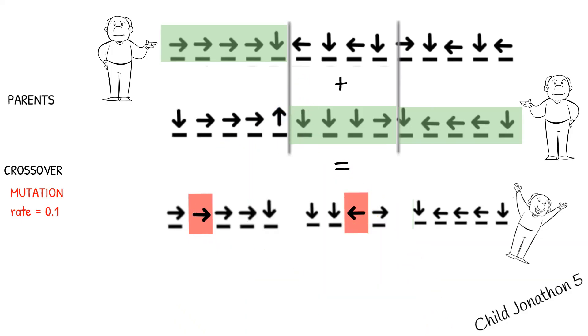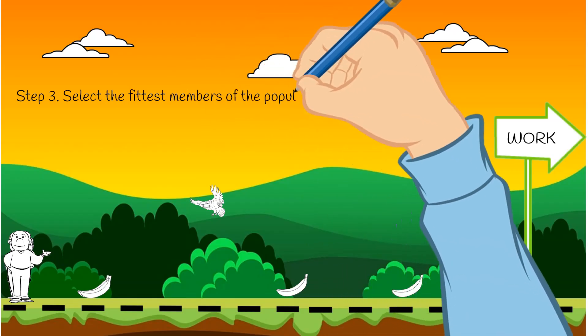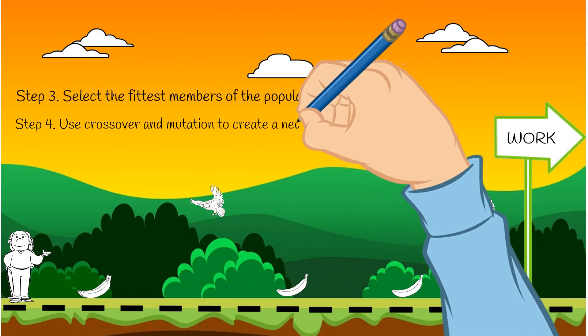Now our first child generation is ready for action, and we can plop them into the park. All we need to do now is repeat steps three to four until we find a Jonathan whose DNA allows him to finally exit the park and go to work.